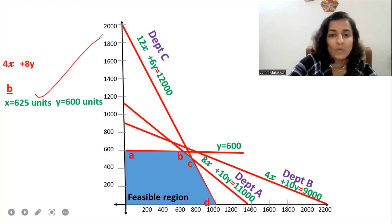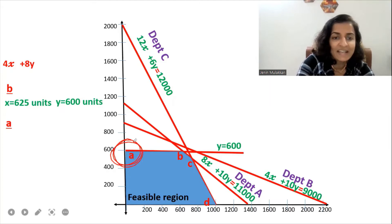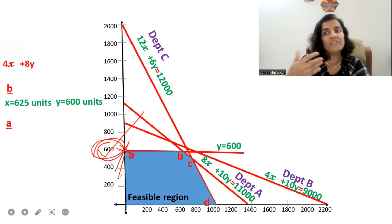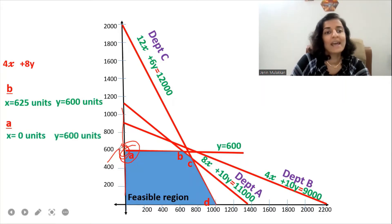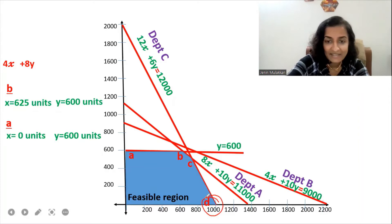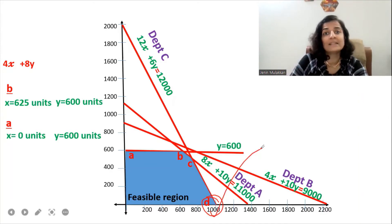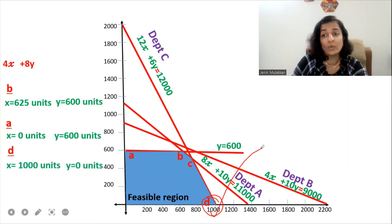We know the values of X and Y at point B. For point A, since it lies on the Y axis, X equals 0 and Y equals 600 units. For point D, since it lies on the X axis, X equals 1000 units and Y equals 0 units.